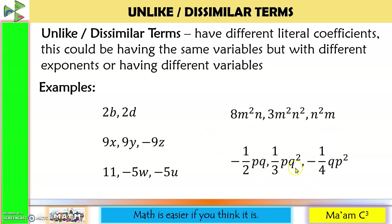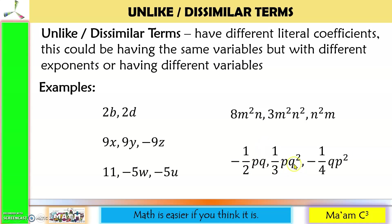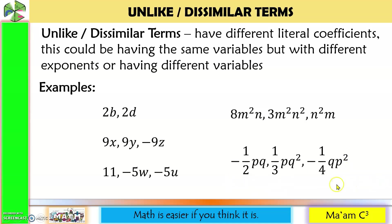PQ, PQ squared, QB squared. The exponents of P and Q are both 1 in the first term, but in the second Q is raised to the second power, and in the third P is raised to the second power. Nothing is exactly the same. So these are dissimilar terms.